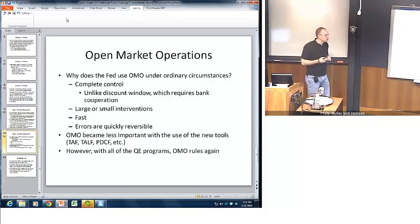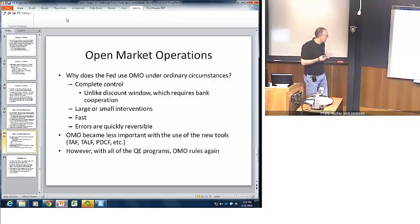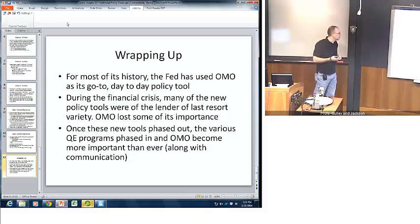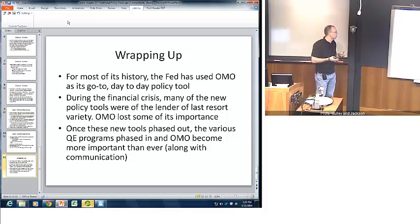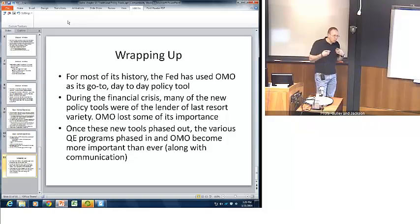During the most recent financial crisis, open market operations became somewhat less important as new tools — such as the term auction facility — acted more as lender of last resort instruments. However, those programs have faded out, and with recent QE programs, open market operations on a day-to-day basis once again rule. Throughout most of its history the Fed has used open market operations as its standard day-to-day policy tool, and now open market operations along with communication have become more important than ever.